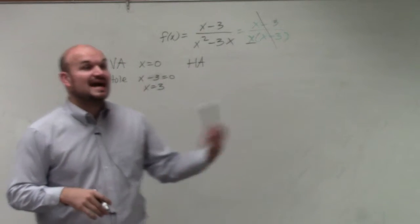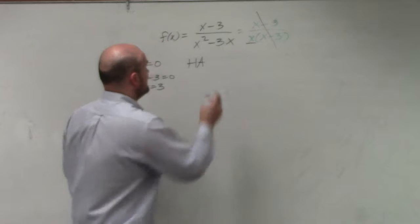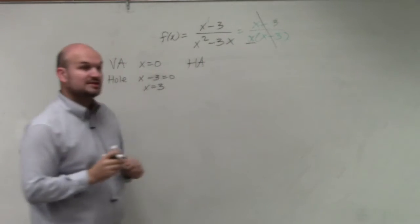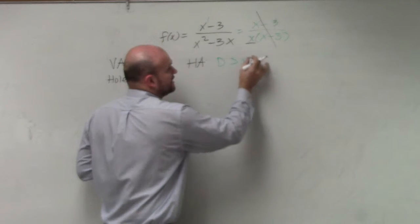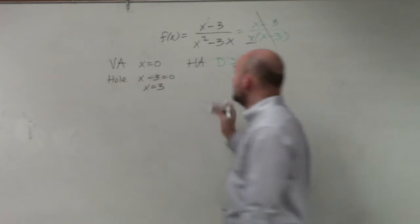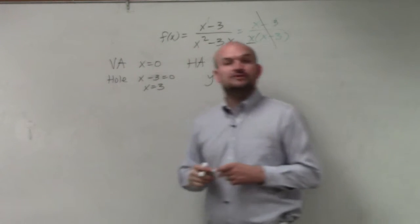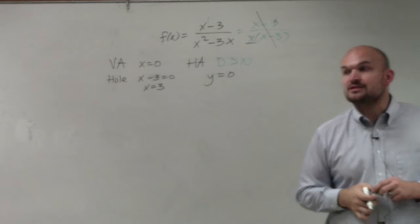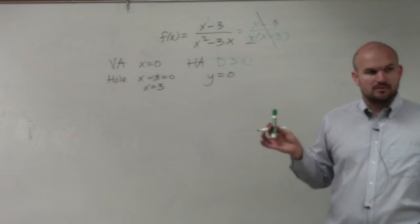I like the problems you guys chose, because the last problem we did, the degrees were the same, right? This one you guys chose, the degrees are not the same. The degree in the denominator is greater than the degree in the numerator. So for your horizontal asymptote, the horizontal asymptote is y equals 0. Whenever the degree in the denominator is larger than the degree in the numerator, it's equal to y equals 0. Always. Done.